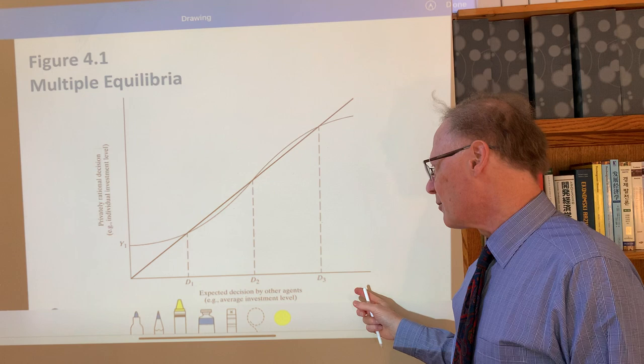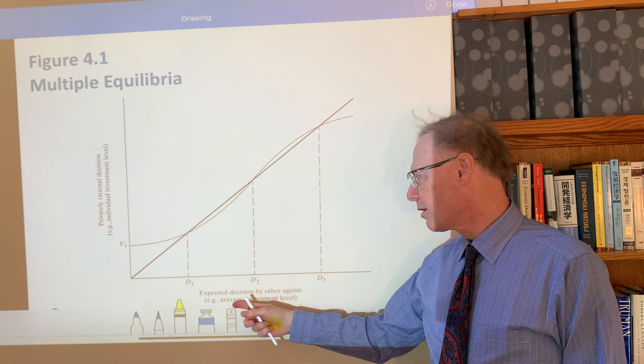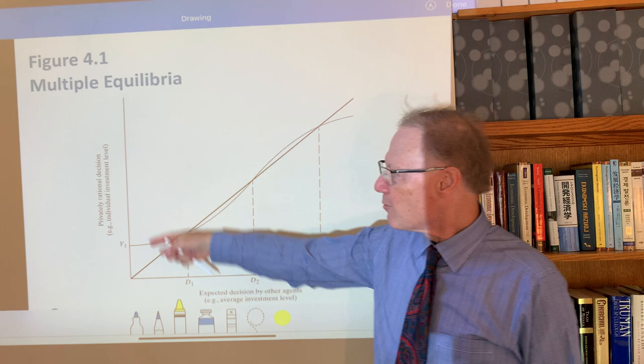And with figure 4.1, we have a similar diagram to what I've just drawn. Here we have the expected decisions of other agents on the x-axis, but here it's the average investment level that we're focusing on at this point in the class.